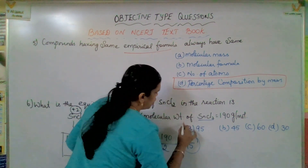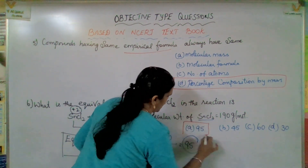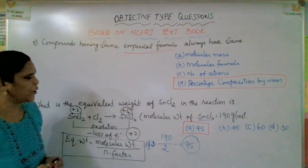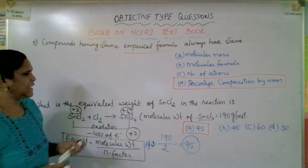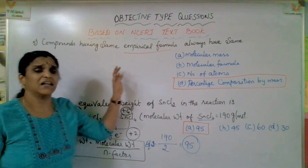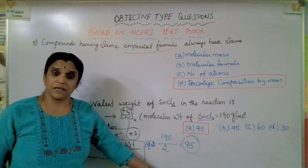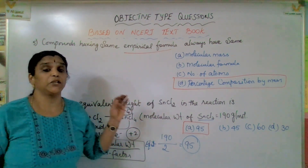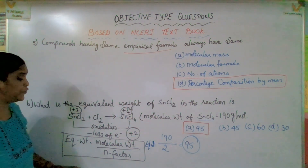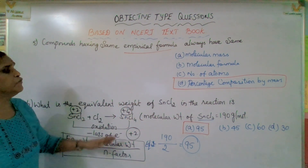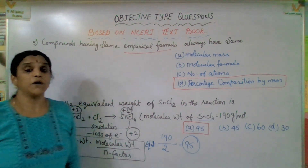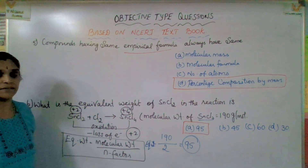Which is the correct option? Option A is the correct option. I hope you got a clear idea. The questions are really simple, but you have to think and write. If you know the formula, it will be easy to analyze.